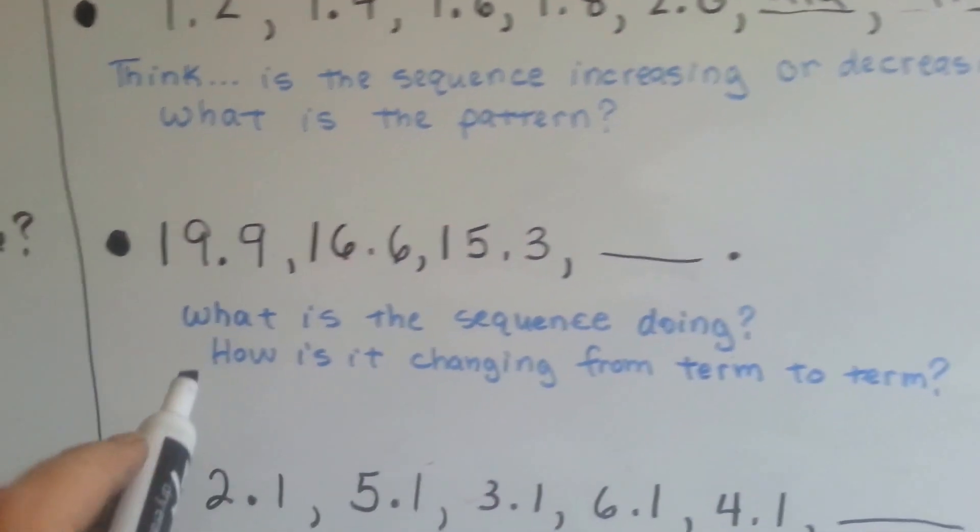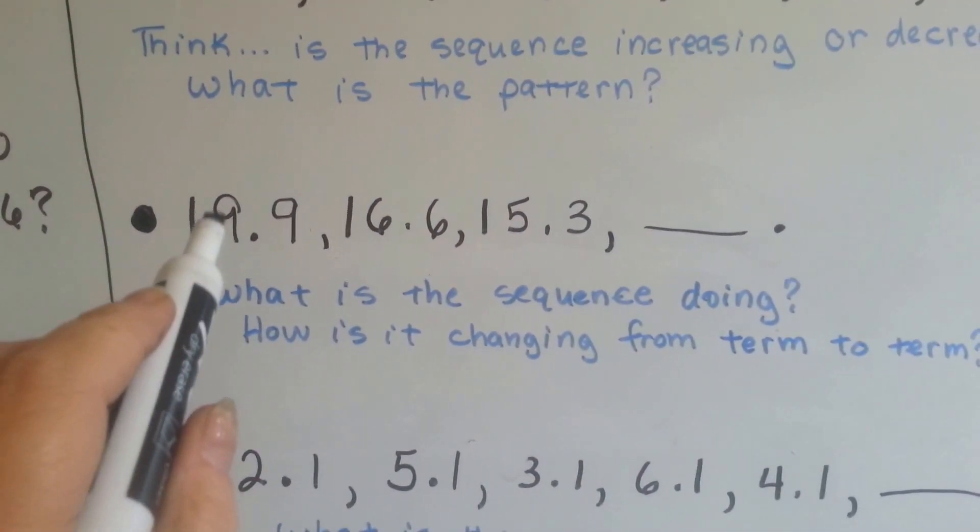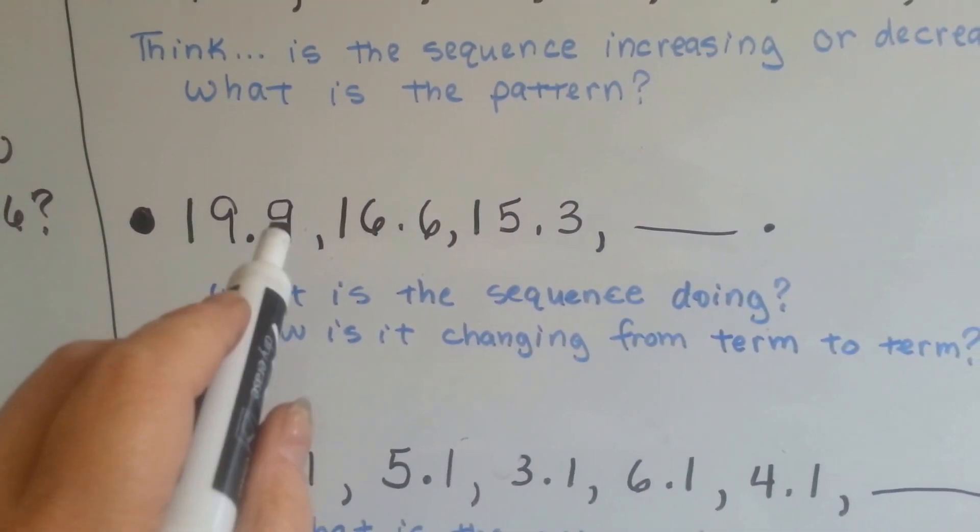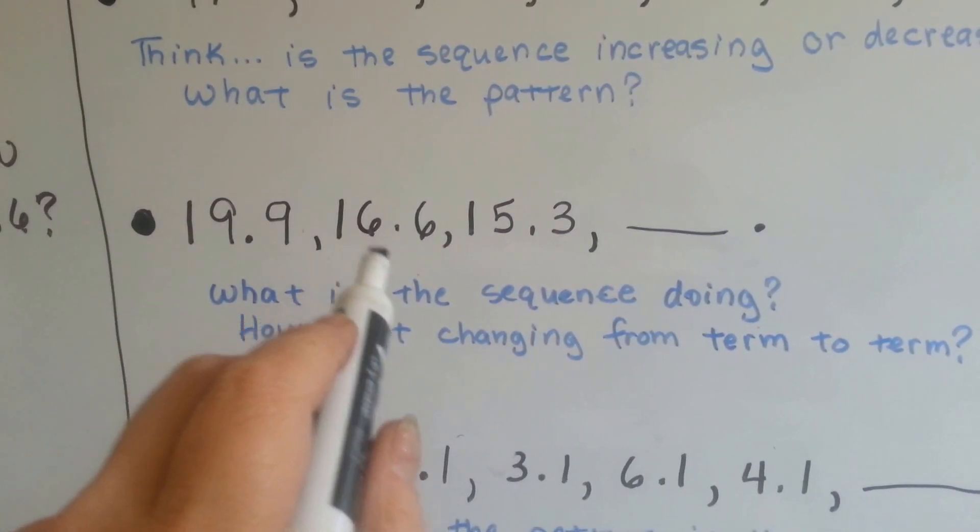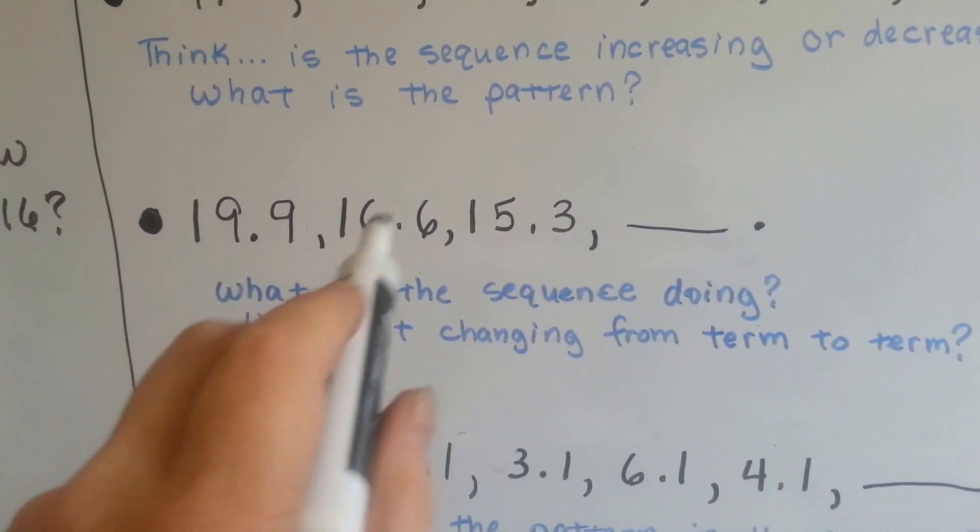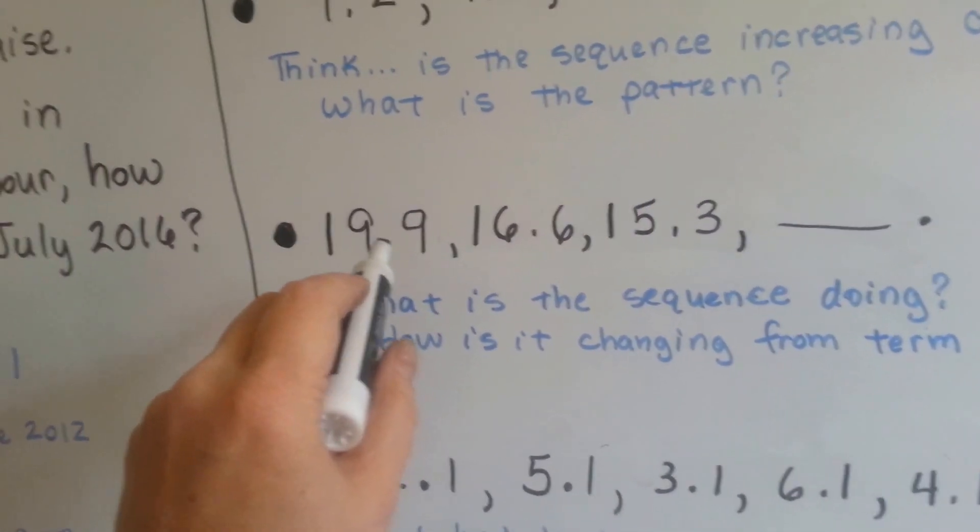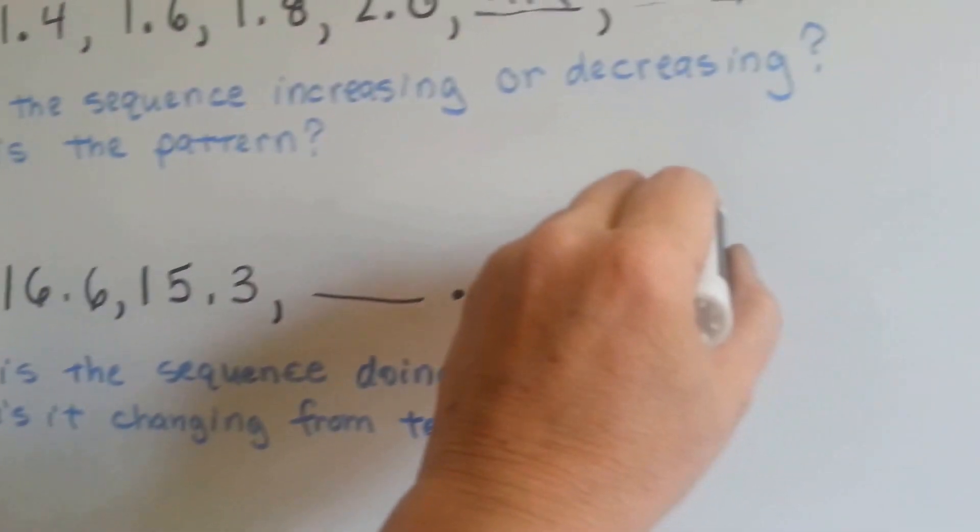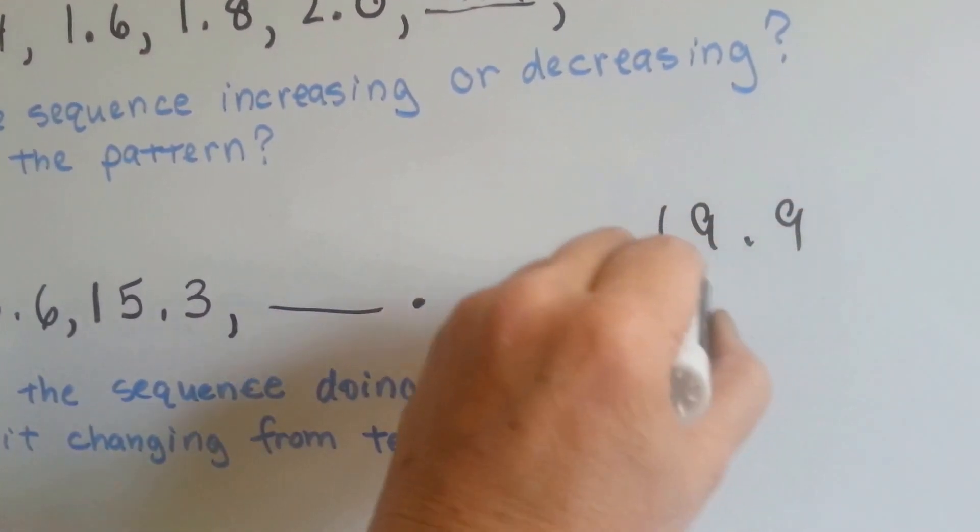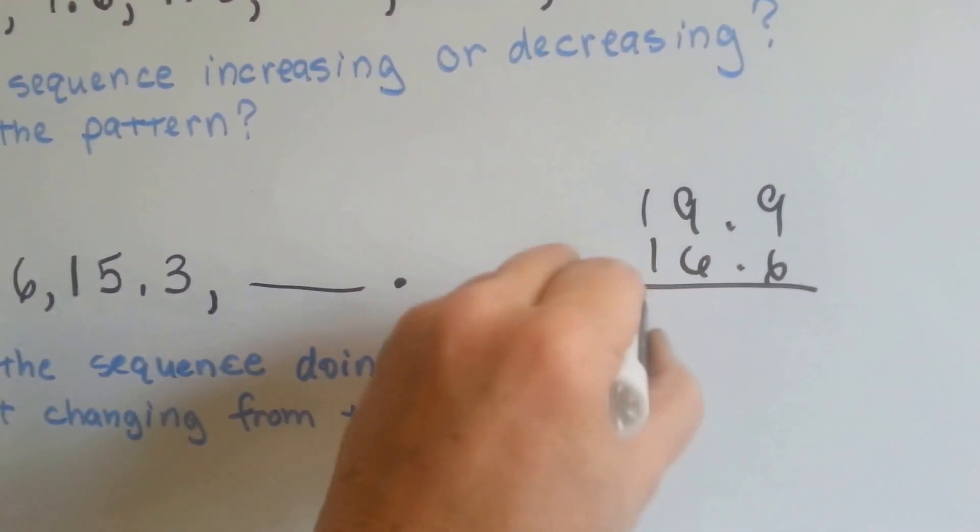How about this one? What is it doing? It's at 19.9, 9 and 9 tenths, then it drops to 16 and 6 tenths. What was the change? Well, what's the difference between 19 and 9 tenths and 16 and 6 tenths? Can you see the difference?